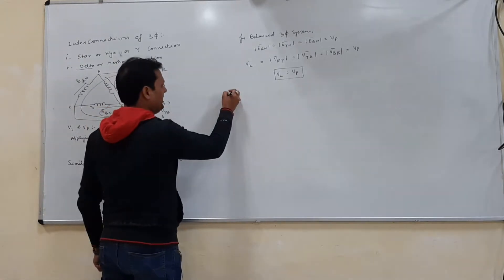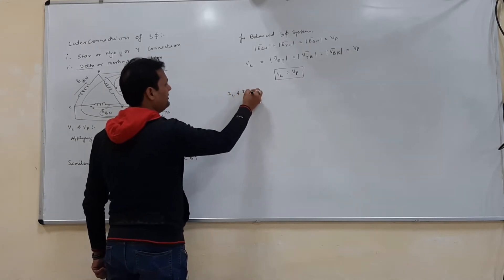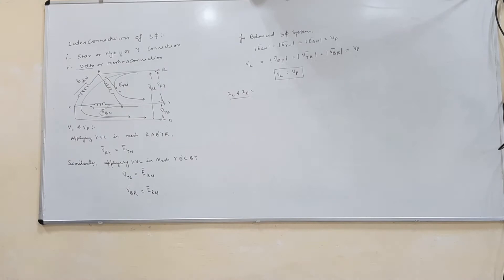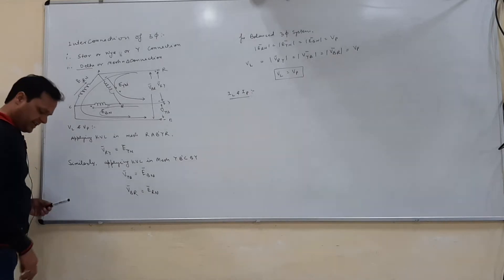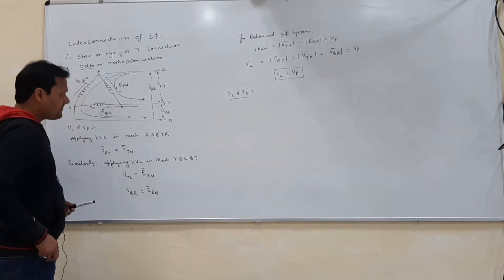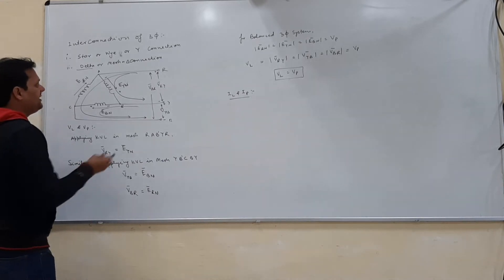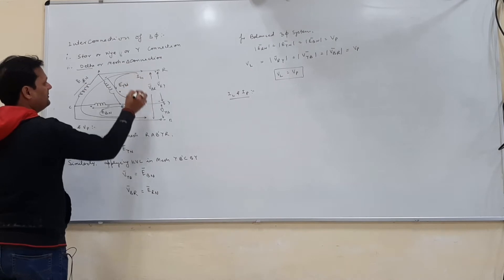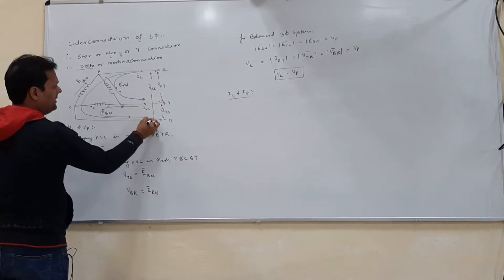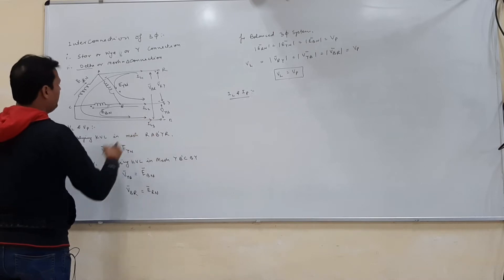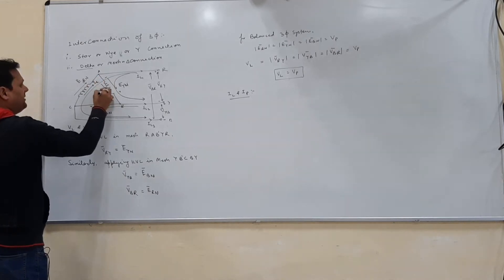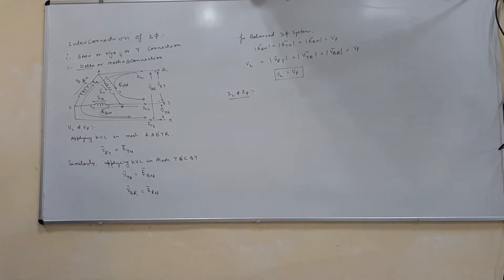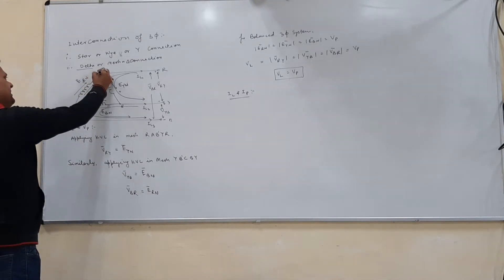The next topic is the relationship between IL and IP. The line currents will be IL1, IL2, and IL3, and the phase currents are IR, IY, and IB. We will apply KCL at node A.